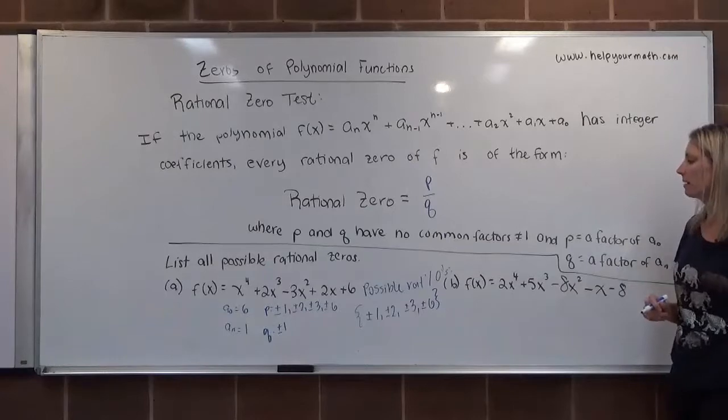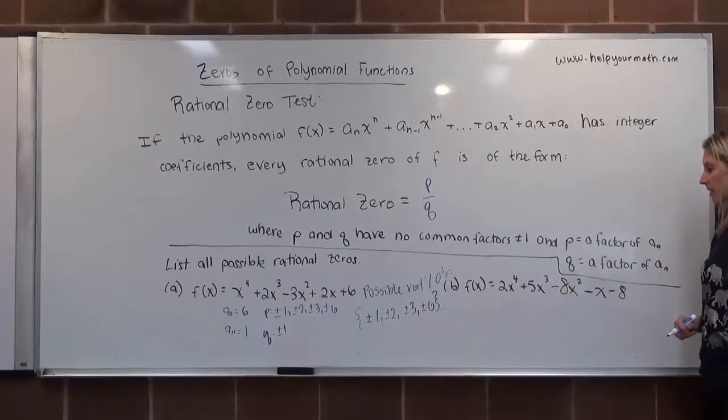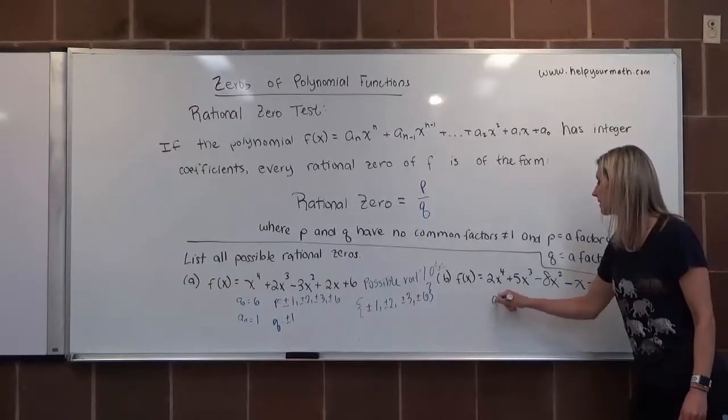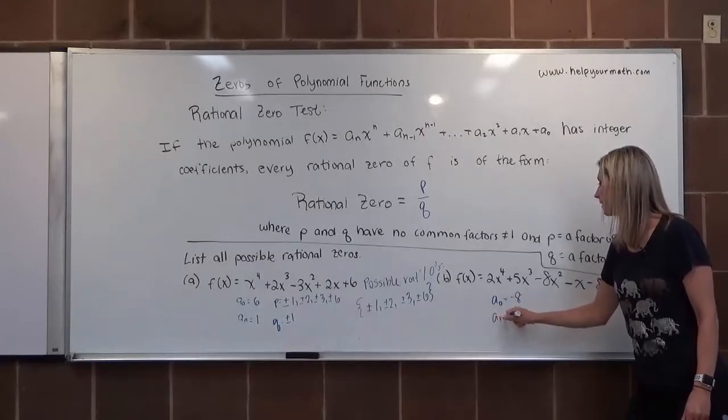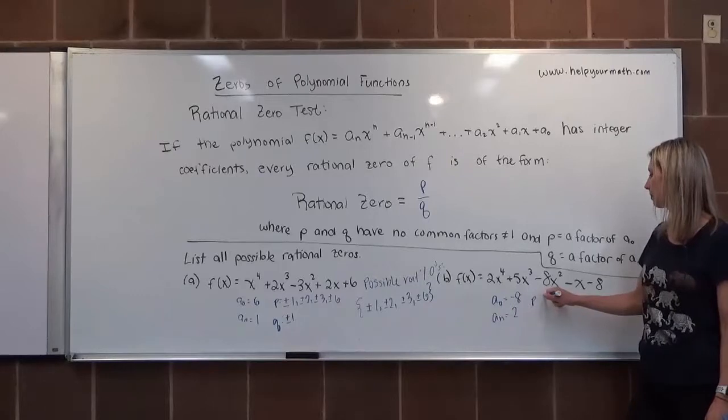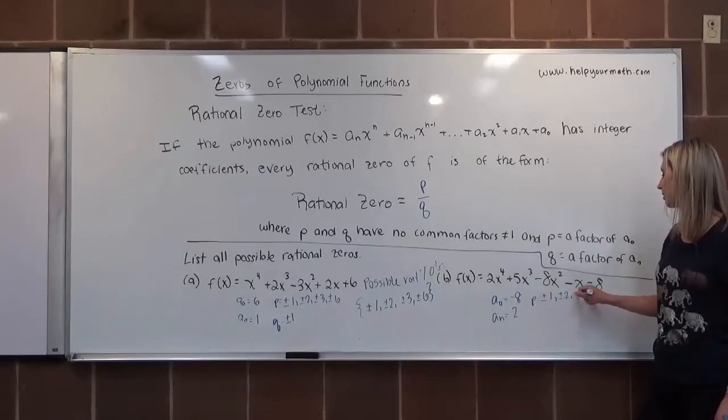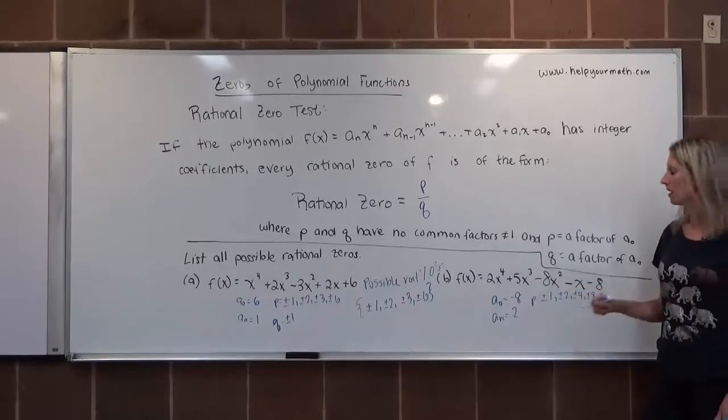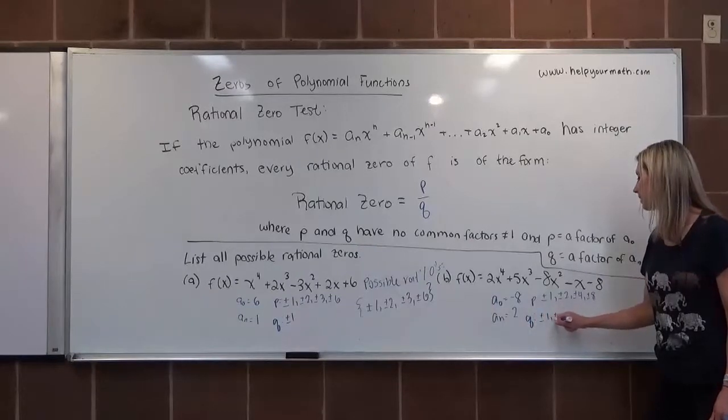Okay let's try it again with letter b. So letter b we have 2x to the fourth plus 5x cubed minus 8x squared minus x minus 8. In this case a sub 0 is negative 8 and a sub n is 2. So the possible p values here will be plus or minus 1, plus or minus 2, plus or minus 4, and plus or minus 8. The possible q values are plus or minus 1 and plus or minus 2.